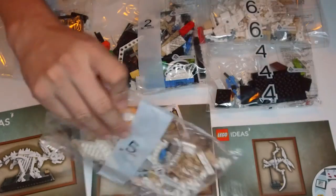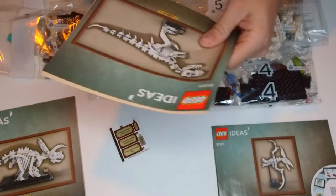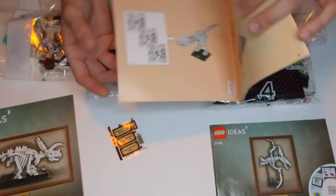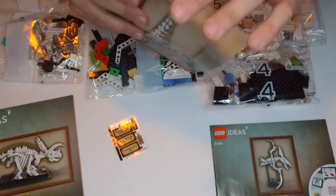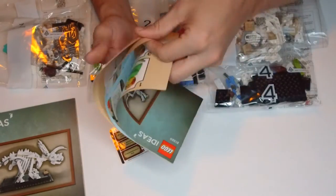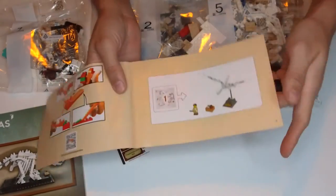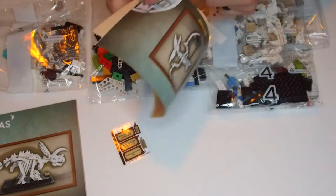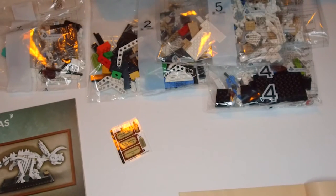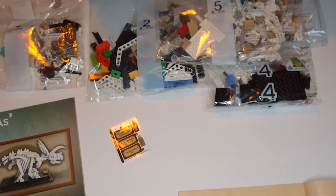All right, so which one should we start? Let's see which one uses bag one and decide that way. So the Tyrannosaurus uses bags four through six, so that one's going to be last. Let's see, the Pteranodon is bag one, so we're starting with Pteranodon. All right guys, so I'm going to get into bag one, sort that out, and then we will get going.